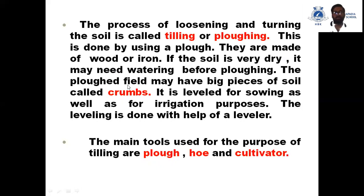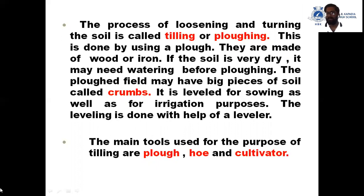The plowed field may have big pieces of soil called crumbs. It is leveled for sowing as well as for irrigation purposes. The leveling is done with the help of levelers. The main tools used for the purpose of tilling are the plow, hoe, and cultivator.